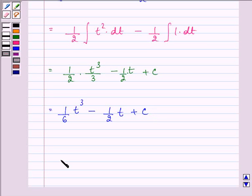Now here, in place of t, we can write secant 2x. So we have 1 by 6 secant cube 2x minus 1 by 2 secant 2x plus c.